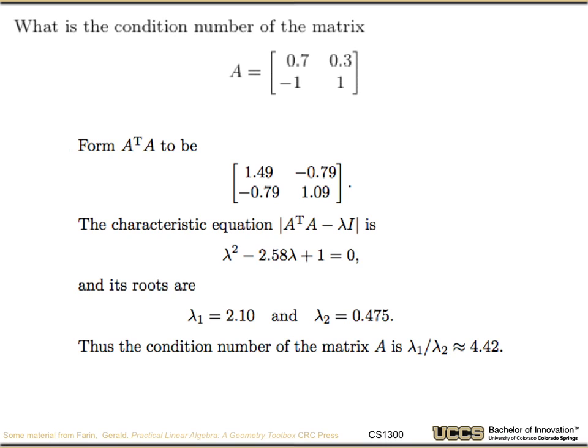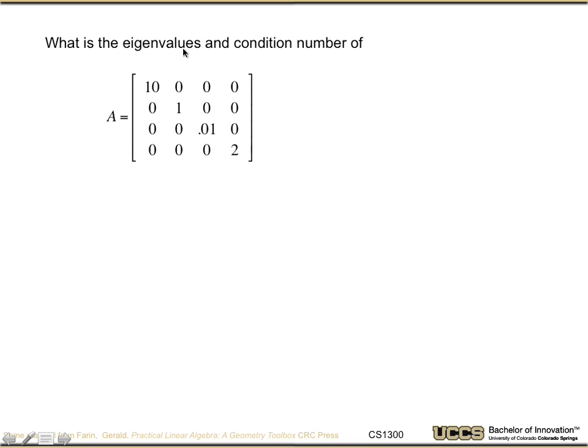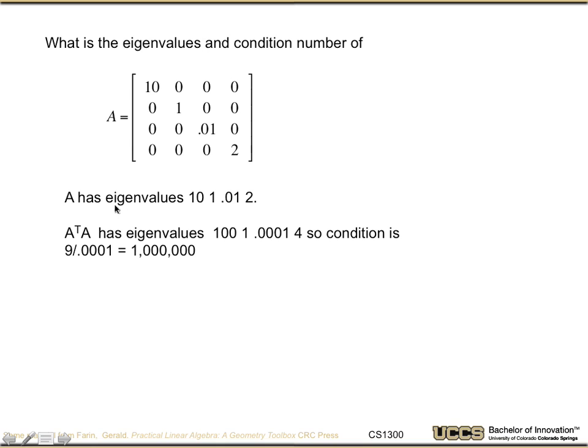Going to a slightly higher dimension problem, let's look at both the eigenvalues and the condition numbers of this real symmetric matrix. Since it's diagonal, hopefully you quickly recognize that it has the eigenvalues of 10, 1, 0.01, and 2. It's just the things down the diagonal.